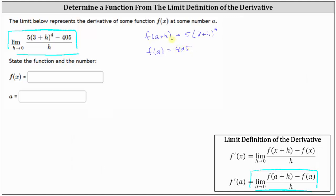Well, if f of the quantity a plus h is equal to five times the fourth power of three plus h, notice a must equal positive three.